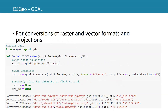We already mentioned GDAL before. It is accessible through the OSGeo library, so we can use the GDAL module from the OSGeo package. Here you can see how that works to convert GeoTIFFs to PCRaster format using GDAL Translate.